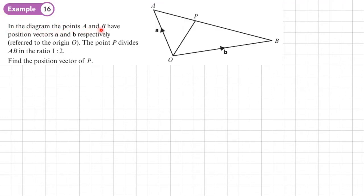Example 16. In a diagram, the points A and B have position vectors A and B respectively, referring to the origin. The point P divides AB in a ratio 1 to 2. Find the position vector of P. So the first thing I'm going to do is write on the diagram this division of the ratio. Point P divides it in ratio 1 to 2 — so I have one here, two here. There are three parts in that ratio, so AP is one third and PB is two thirds.